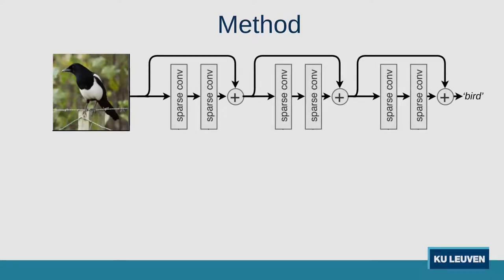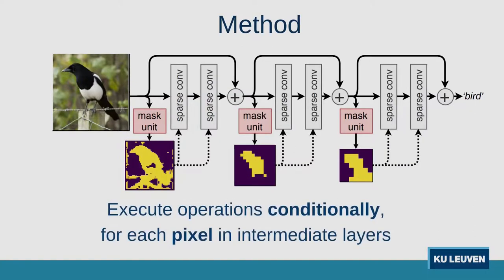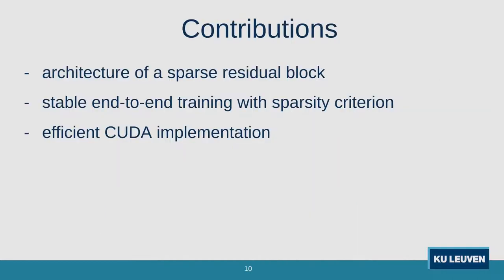We propose to augment residual blocks with a small masking network that determines the pixels to be evaluated. Convolutions are only applied on those pixels. In this work we introduce the architecture of a sparse residual block.